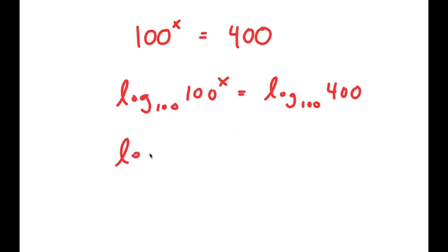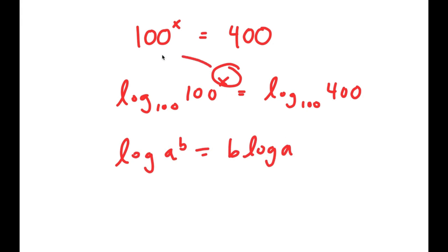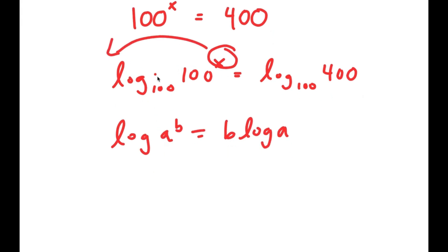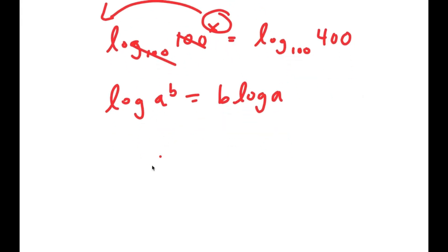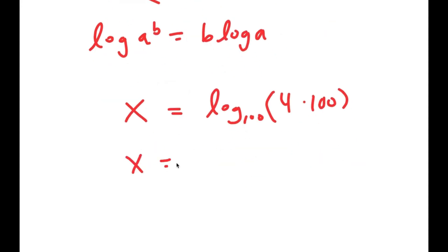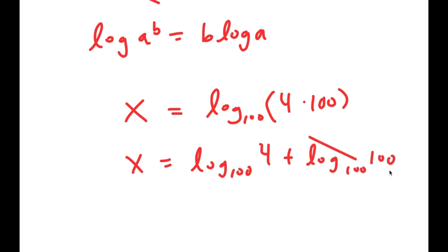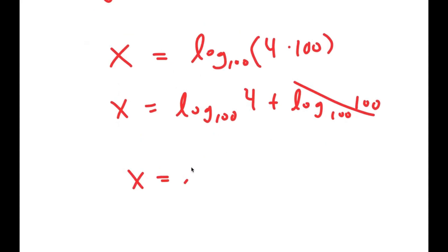Now, if I have something in the form log a to the power of b, this is equal to b times log a. So I can move this x to the front, and the log base of 100 and 100 cancel out. So my left-hand side, I have x is equal to log base 100. And I'm going to rewrite 400 as 4 times 100, so now I get x is equal to log base 100 of 4 plus log base 100 of 100, which cancels out to get 1. So I get x is equal to log base 100 of 4 plus 1.